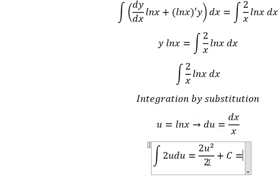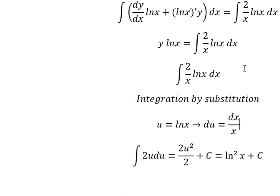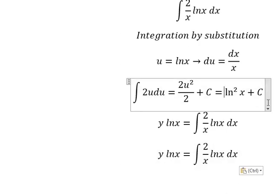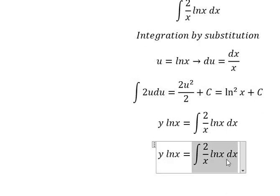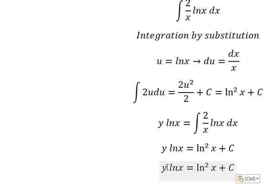ln squared x divided by 2, and then we put c here. So the integration of this one gives this. Later, we divide both sides by lnx, and we have the final answer.